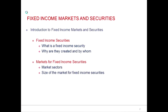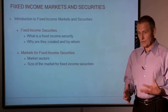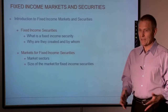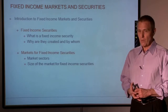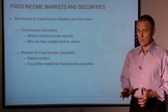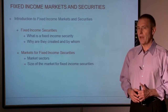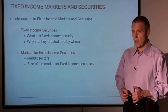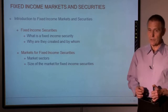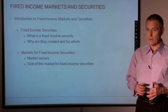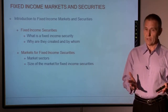First off, it might be a good idea to talk about what a fixed income security is, to give you a sense of the general characteristics of these types of securities, as well as who creates them and why they're created. In general, a fixed income security is any debt security or debt obligation — we'll talk about that in more detail in just a few moments. And they're created by issuers, that is, entities that are borrowing money by issuing these securities.